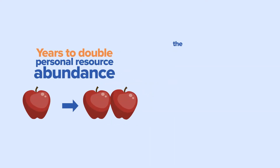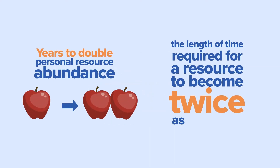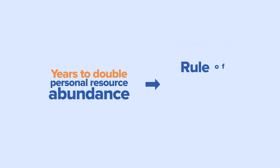The doubling period refers to the length of time required for a resource to become twice as abundant. To calculate the doubling period, we can use the Rule of 70.